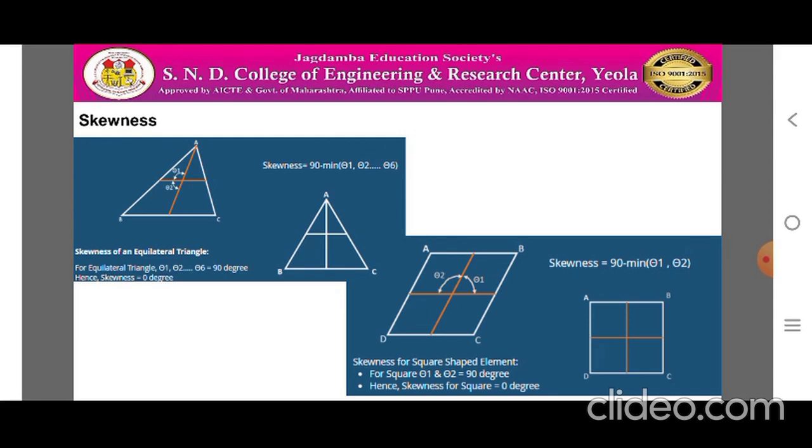Similarly, for square shape, skewness equals 90 minus minimum theta. For square, theta1 and theta2 are 90 degrees and skewness for square is 0 degrees. This is about the skewness.